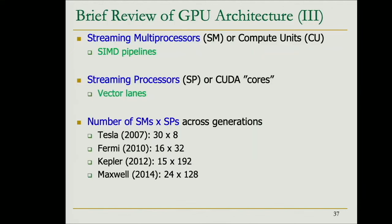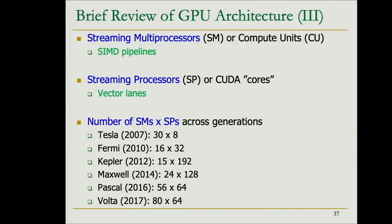Here is a terminology comparison across NVIDIA GPU generations. The latest listed is Volta (released late 2018 or early 2019), with Turing being the most recent but not shown in the slide. The overall architecture remains similar to Volta, but you can see the full evolution and the naming conventions for each generation.